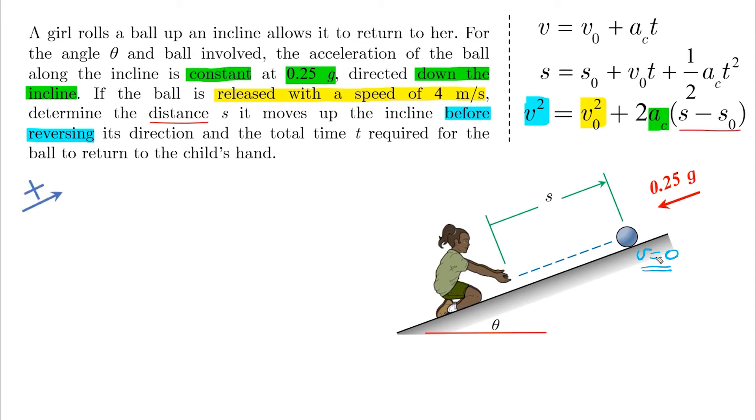Assuming positive going up, we substitute the values making sure that acceleration is negative because it's directed down the incline. By solving, you will get s equals 3.26 meters. Make sure that all signs are making sense to you before moving to the next part.